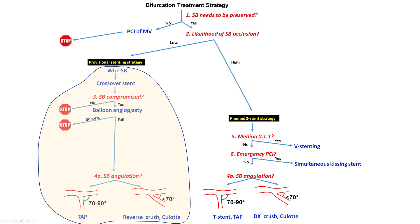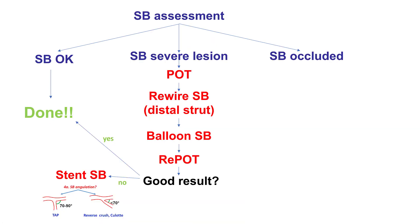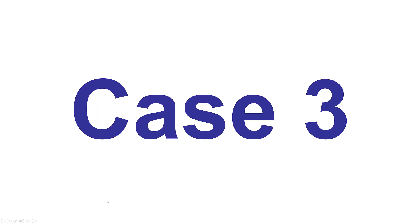What happens if balloon angioplasty alone is not enough and fails to completely correct the problem? That is when one may have to place another stent. Different techniques can be used depending on angulation — for example, T-and-protrusion (TAP) or reverse crush. TAP is for more 70 to 90 degree angles and reverse crush for shallower angles. Many people, including myself, prefer reverse crush because TAP can result in some length of stent protruding into the main vessel.